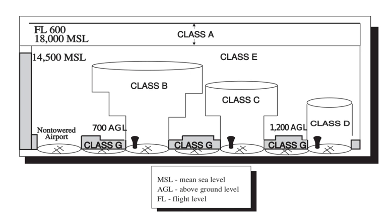Class D airspace is generally airspace from the surface to 2,500 feet above the airport elevation surrounding those airports that have an operational control tower. The configuration of each Class D airspace area is individually tailored, and when instrument procedures are published, the airspace is normally designed to contain the procedures. Arrival extensions for instrument approach procedures may be Class D or Class E airspace. Unless otherwise authorized, each aircraft must establish two-way radio communications with the ATC facility providing air traffic services prior to entering the airspace and thereafter maintain those communications while in the airspace.